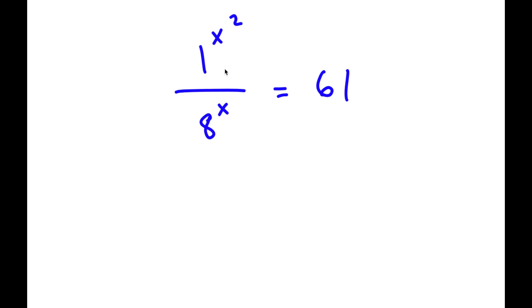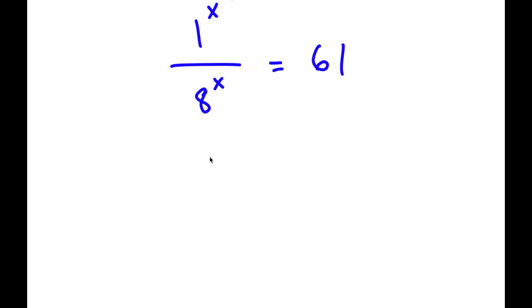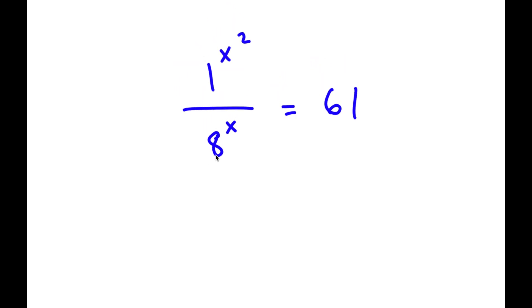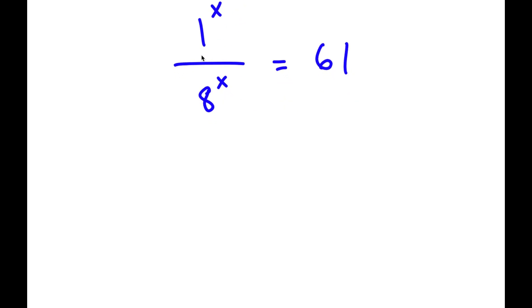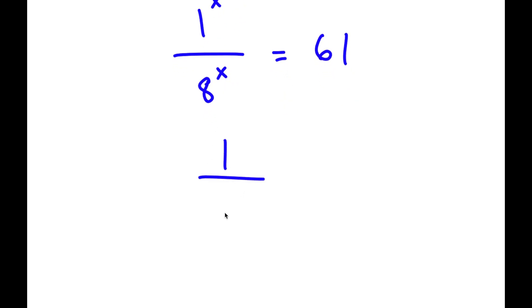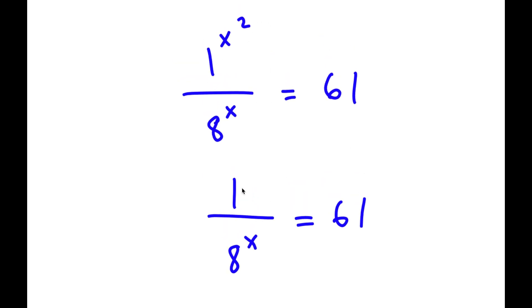In this problem, I have 1 to the power of x squared over 8 to the power of x is equal to 61. The first thing I'm going to do: it's pretty obvious that 1 to the power of any number is simply 1, meaning whatever the value of x is, 1 to the power of x squared is 1.